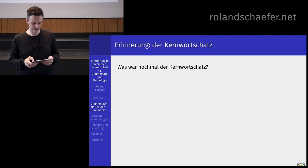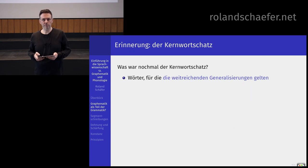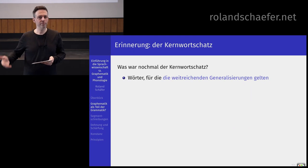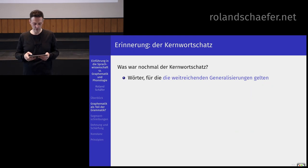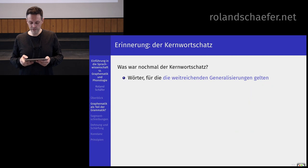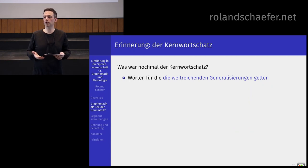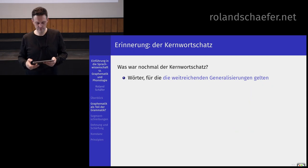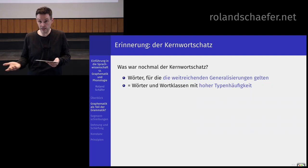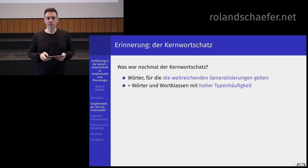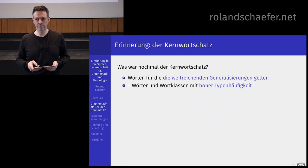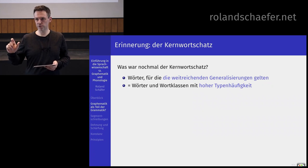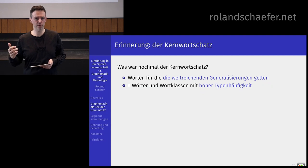Was war noch mal der Kernwortschatz? Das sind zum Beispiel Wörter, wenn wir nur über Wörter reden, die den weitreichenden Generalisierungen entsprechen – den Generalisierungen, die meistens gelten. Das ist der Kernwortschatz. Zum Beispiel Wörter und Wortklassen mit einer hohen Typenhäufigkeit. Erinnern Sie sich? Typenhäufigkeit – das sind zum Beispiel Modalverben: da gibt es nur sechs verschiedene, Typenhäufigkeit ist sechs. Alle anderen Verben, Vollverben, Typenhäufigkeit: ein paar tausend verschiedene.